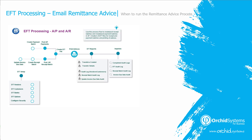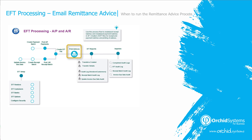For AP and AR, you run the remittance advice after you've created the EFT file. First you would create the AP payment batch, or the AR receipt batch or AR refund batch, post the batches, then create the EFT file, and then print the remittance advice.